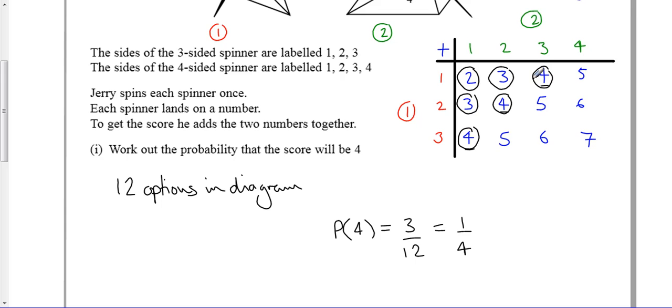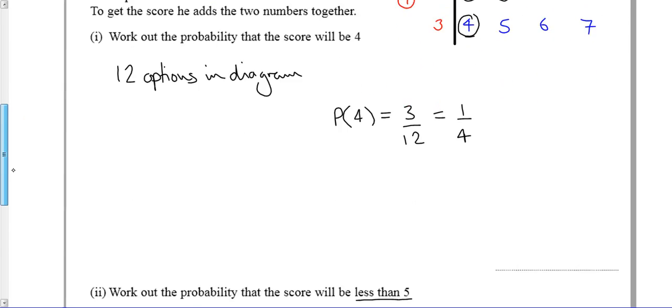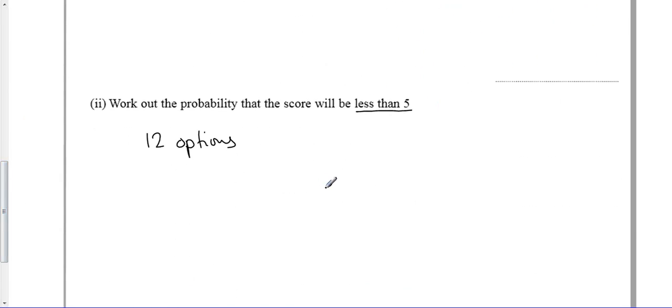That's 1, 2, 3, 4, 5, 6 things that I want. So the probability of less than 5 is 6 out of 12, or if you simplify it, you get half.